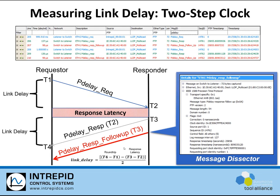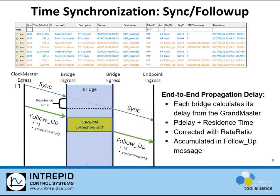A unique link delay is calculated continuously between every two nodes, or between a node and the port on the switch that it's connected to, using at least two specialized messages: PDelayRequest and PDelayResponse. Time and information is transmitted in these messages so that the requester node or master node has enough information to accurately calculate the link delay between itself and the port or node that it's connected to. Another specialized message called the sync message is transmitted by the clock master so that a bridge or switch can calculate the time it takes the sync message to go from the ingress port to the varying egress ports on the switch. This is called the residence time.